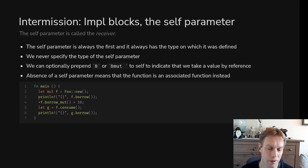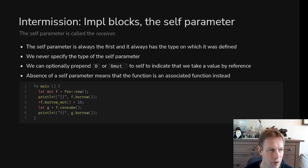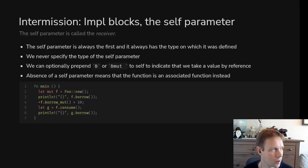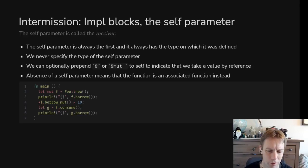So that was a short intermission into how you define methods on structs and enums. We'll get back to some of the most common types that you use in Rust in the next video — see you then.